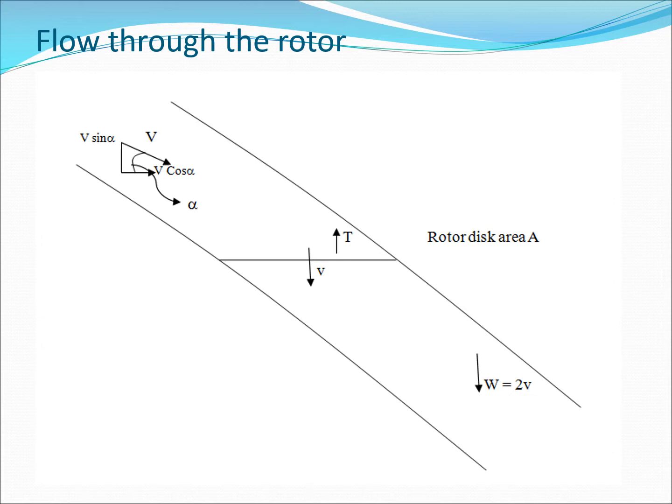Let's return to our flow field for the flow through the rotor in forward flight. Like I mentioned in the last lecture, through the rotor, the induced velocity is small v. Far upstream, there is a forward velocity V at some inclination alpha to the rotor disk plane. This V has two components given by the sine and the cosine. Far downstream, the velocity w equals 2v.